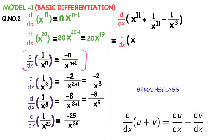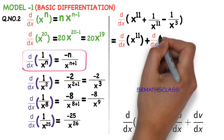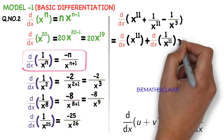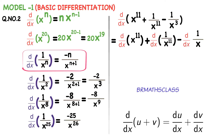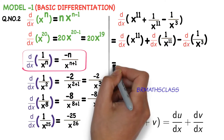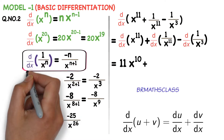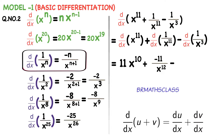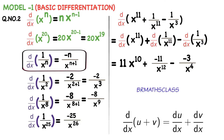Derivative of x power 11 plus derivative of 1 divided by x power 11 minus derivative of 1 divided by x cube. Now you observe: we are differentiating each and every function. The derivative of x power 11 is 11 into x power 10. Plus, applying the formula d by dx of 1 by x power n: minus 11 divided by x power 11 plus 1, which is x power 12. Minus the derivative of 1 by x cube, which is minus 3 divided by x power 4. In this way, while doing problems, we use the formula d by dx of 1 by x power n is minus n divided by x power n plus 1.